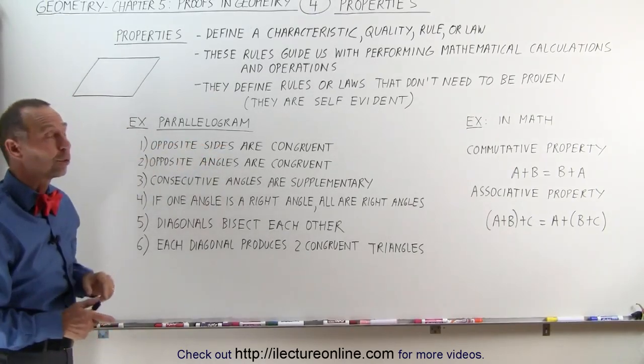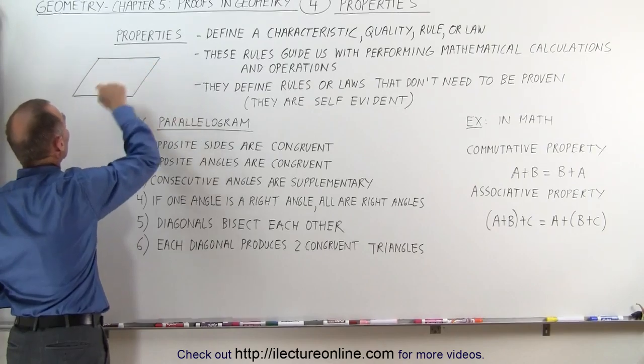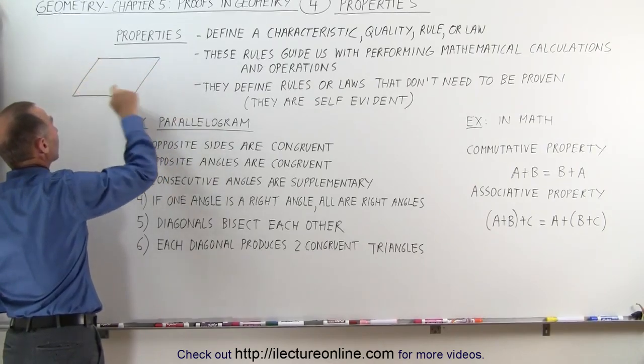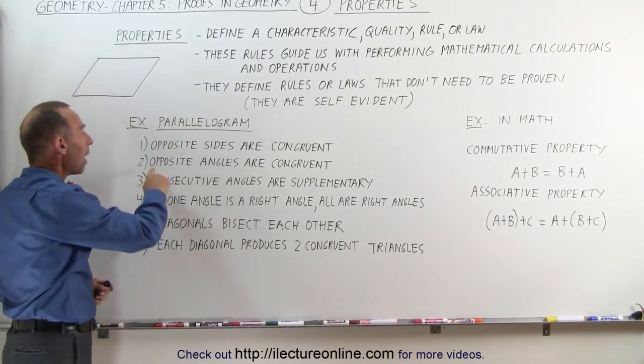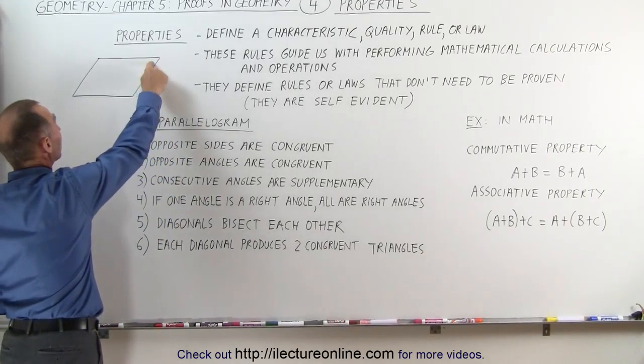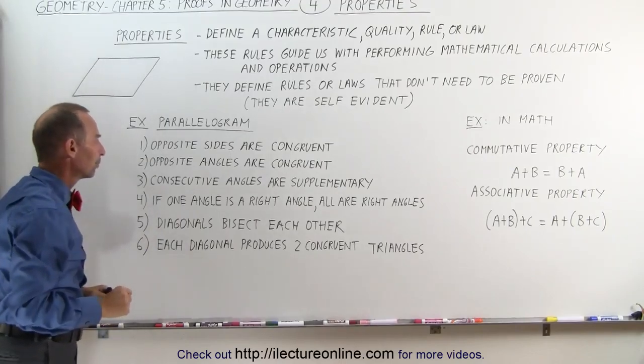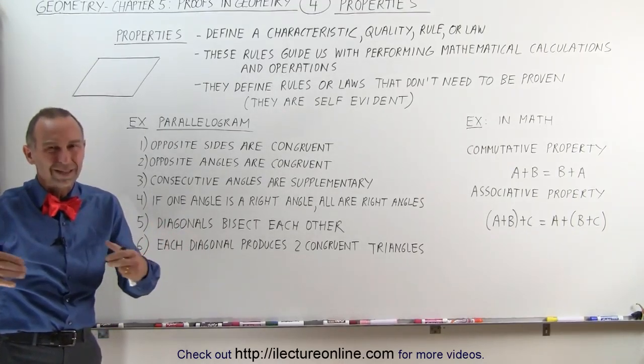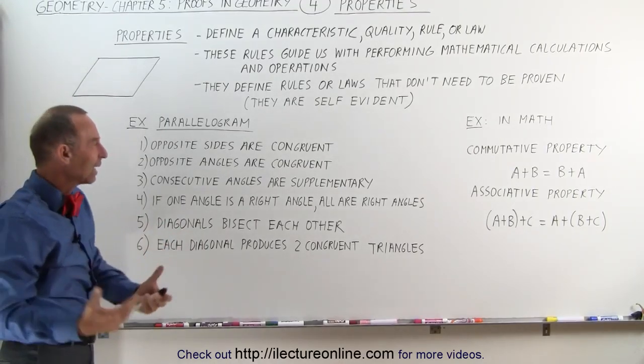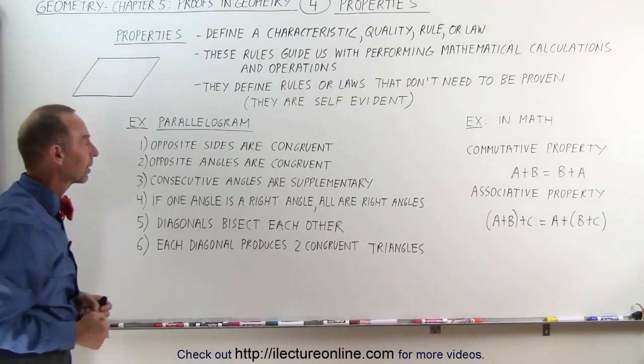First of all, opposite sides are congruent. This side is congruent to this side and this side is congruent to this side. Opposite angles are congruent. This angle is congruent to this angle and this angle is congruent to this angle. Of course, the word congruent means they're the same length or magnitude or angle.